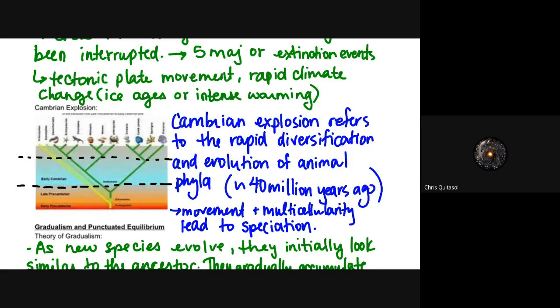When we look at the Cambrian explosion, it refers to the rapid diversification and evolution of animal phyla in approximately 40 million years, which is, in the grand scheme of things, when you think about 3.5 billion years of evolution and life on the planet—40 million years is like a tiny fraction of it. This allowed for a huge boom over a very short period of time as a result of these niches that were left open once an extinction event happened. It allowed for rapid movement and speed within animals, and that multicellularity led to speciation.